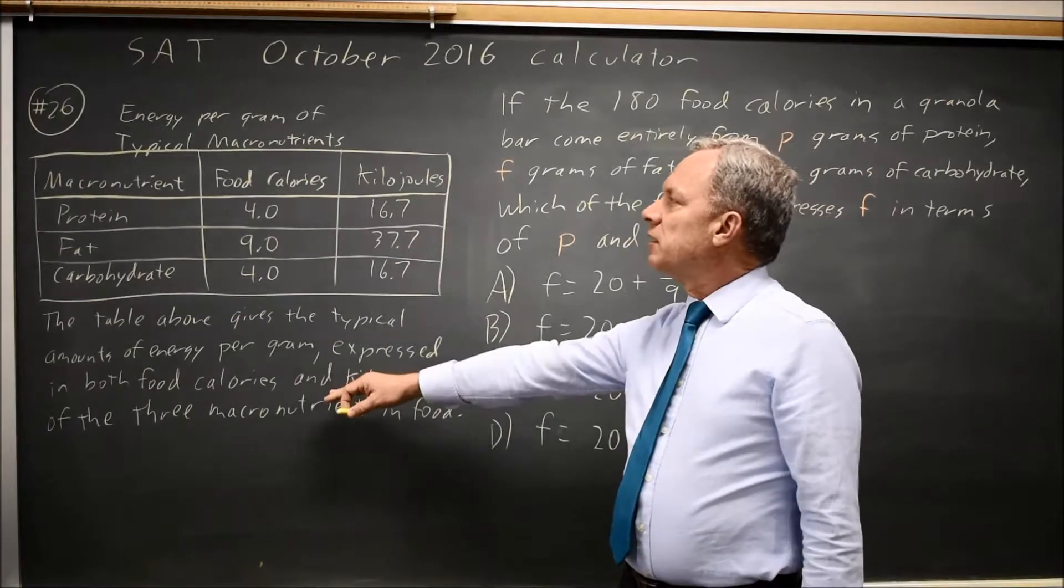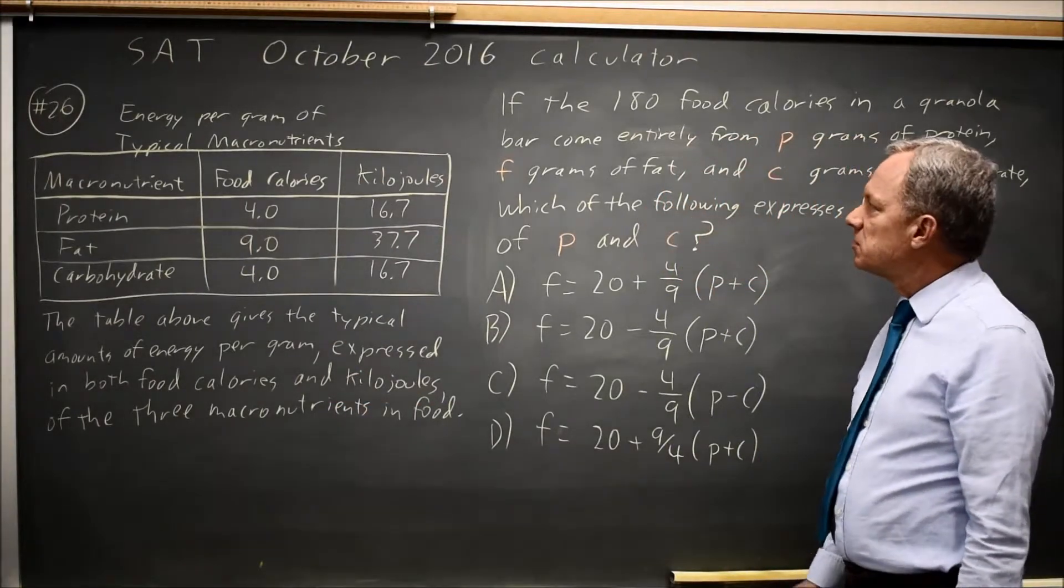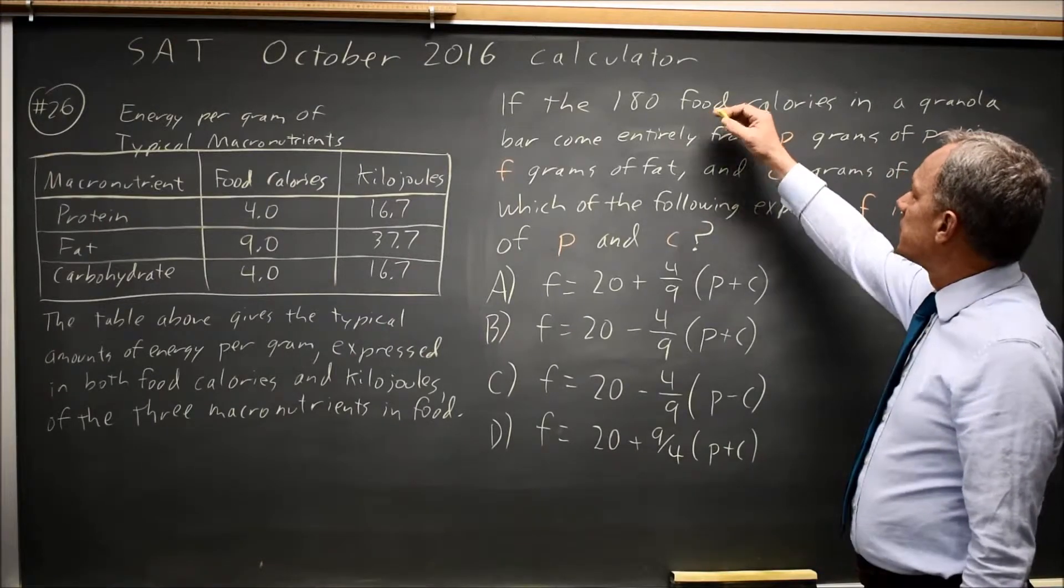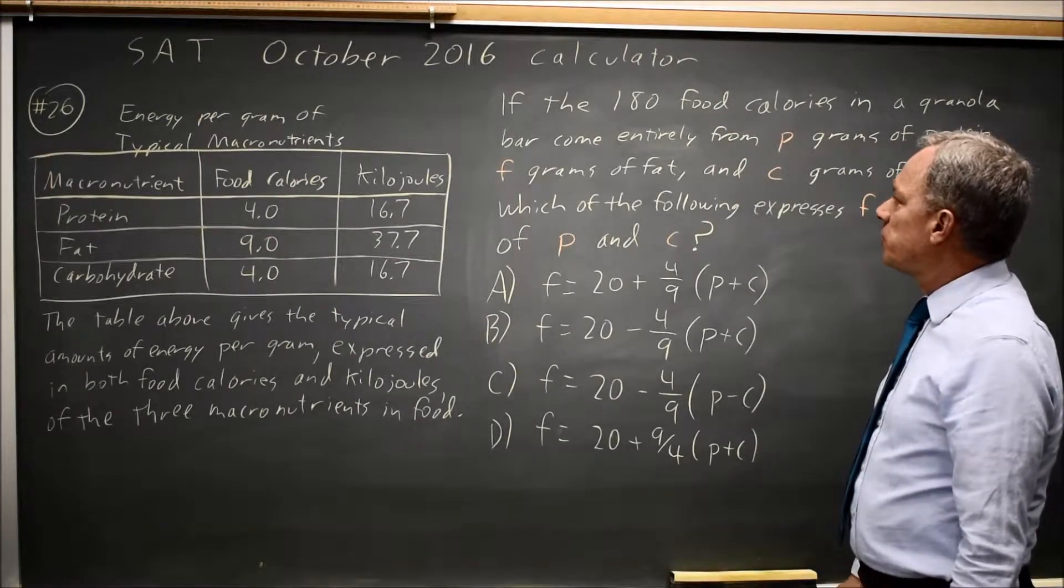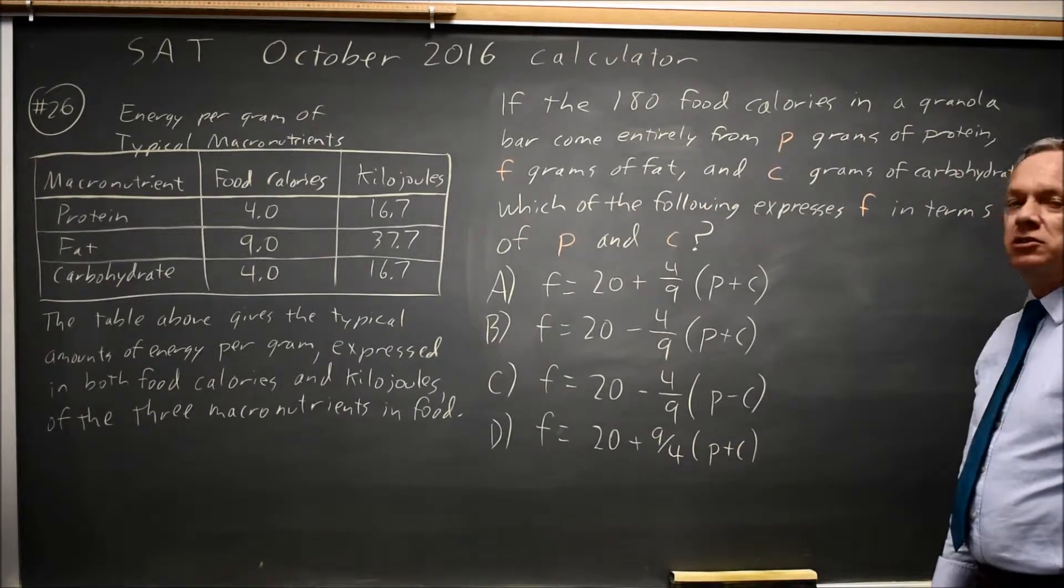College Board gives us a table of energy, calories, and kilojoules for protein, fat, and carbohydrates, and they ask if 180 calories comes from P protein, F grams fat, and C grams carbohydrate, solve for F.